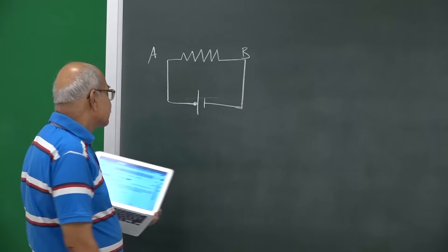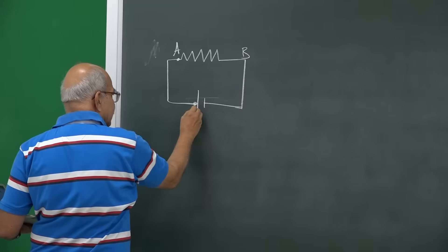If this point is A and this point let us say C, then VC minus VA is 0.